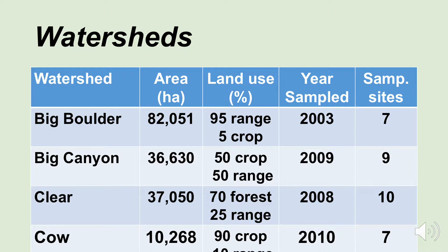We had the Clear Creek watershed, again in northern Idaho — 37,000 hectares in size, primarily a forest watershed: 70% forest, 25% range, and 5% miscellaneous. It was sampled in 2008 and there were 10 sampling sites. Then we had the Crow Creek watershed, which is in Latah County, 10,268 hectares in size — 90% cropland, 10% rangeland. It was sampled in 2010 and there were seven sampling sites.